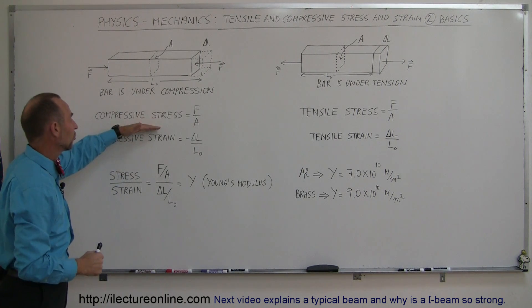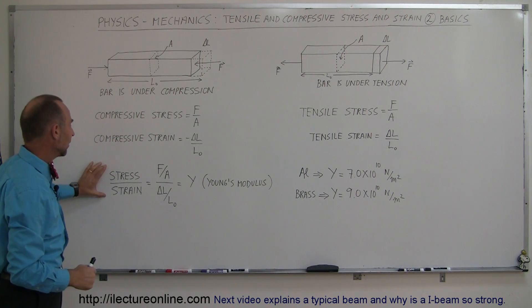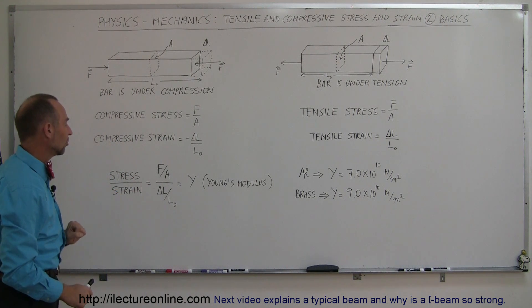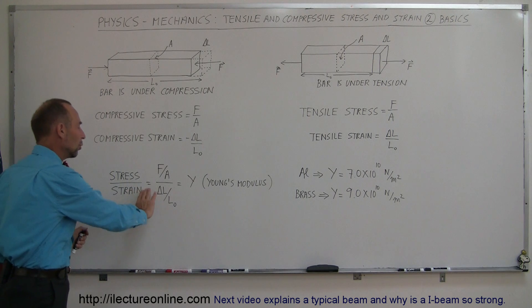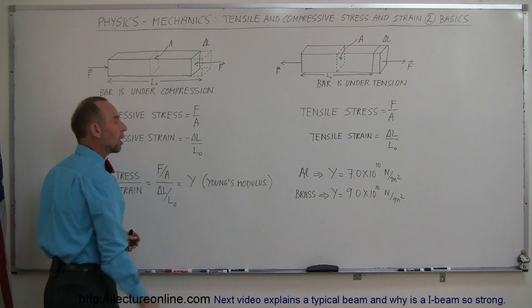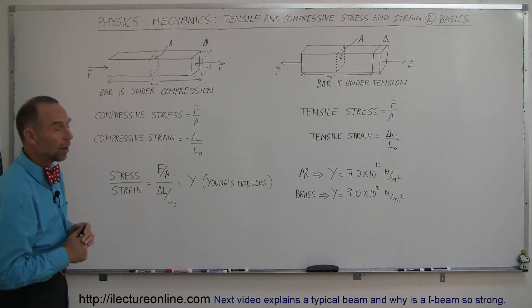The ratio of stress over strain is F over A divided by the change in length divided by the original length. We can ignore the negative for a moment. That ratio is called the Young's modulus. Now let's take a look at our second bar.